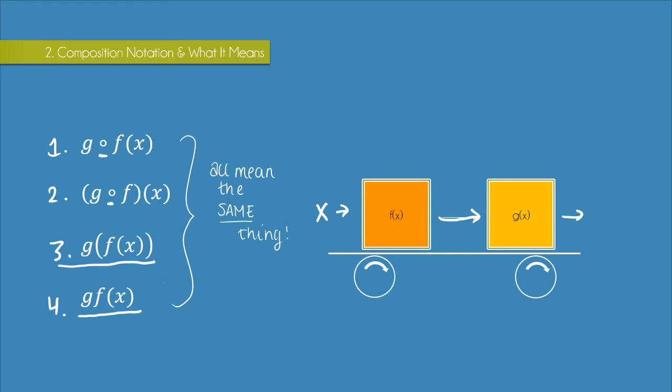And as we saw in the last slide, the order of the letters is the opposite to the order of the actual functions. So first we would pass our input to f of x and then on to g of x.